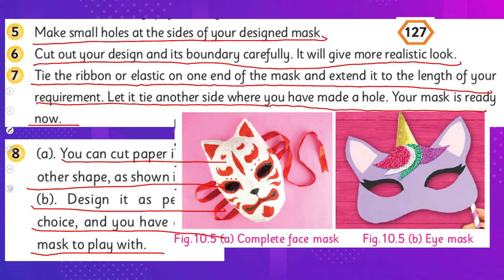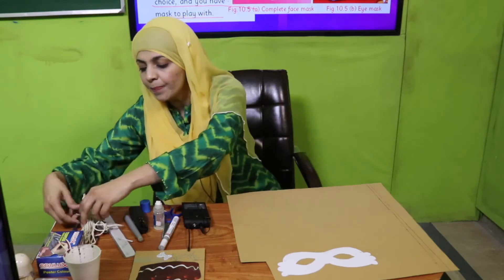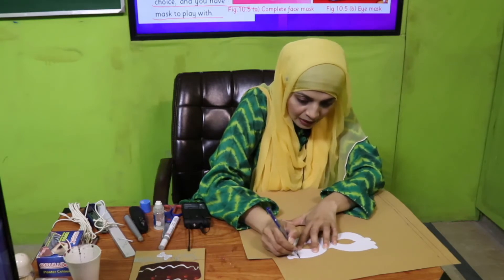You can use elastic or a rubber band to tie it around. For the eye mask, you will need the boundary of the eye mask drawn on a thick chart paper. Here you can see this is the stencil for the eye mask. First of all I will draw the boundary of the eye mask like this.